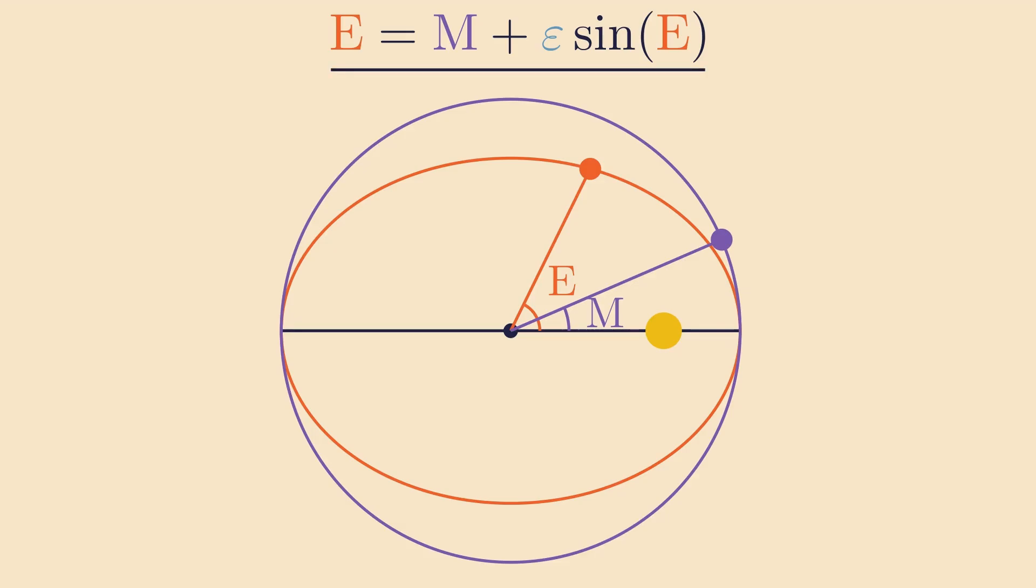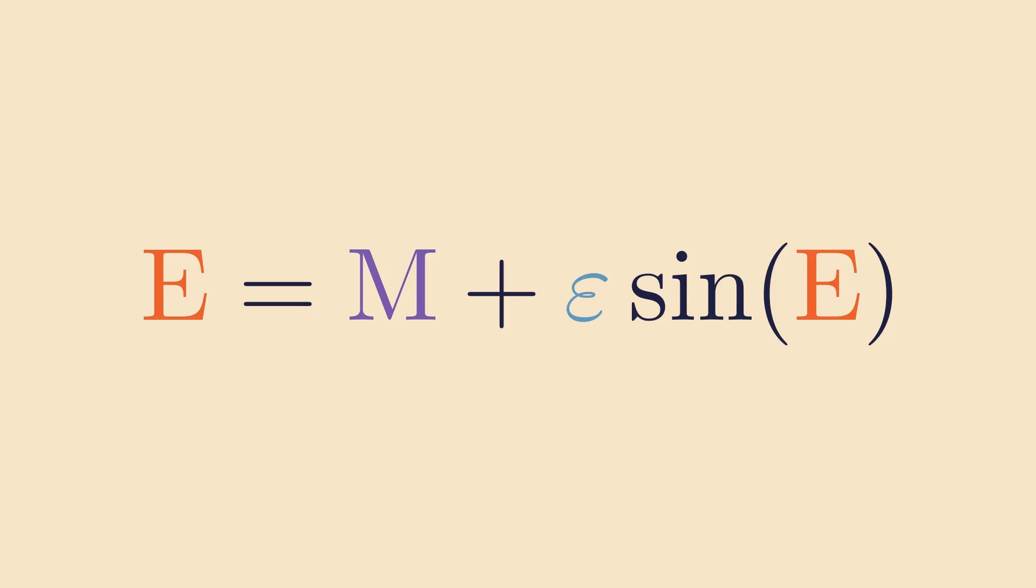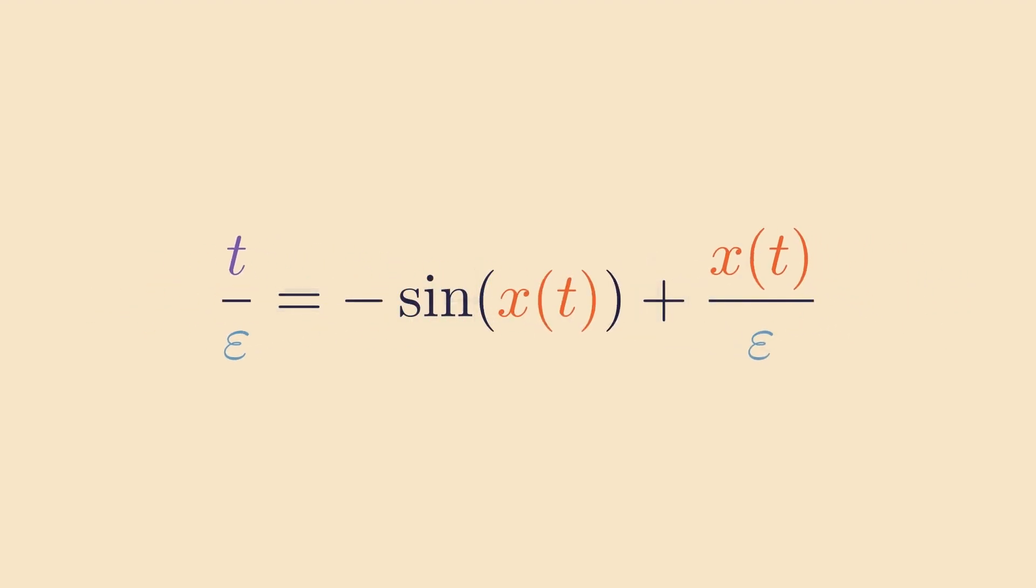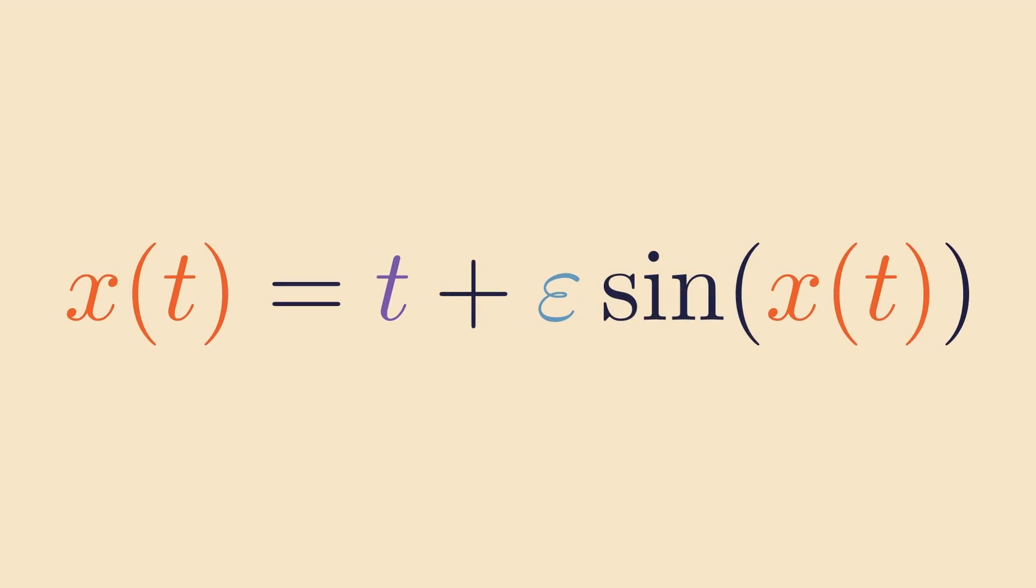Since m will be a function of time and e won't have position, we can then solve for the position of the planet in terms of time. Perhaps this relation is easier seen if we change the name of the variables. We'll call mt because it's related to time, and e x(t) because it's related to position. This substitution also brings out the fact that t is our input and x(t) is our output. Now look at the equation again. It's not easy to separate the variables, and it's not trivially solved. This is what's known as a transcendental equation.